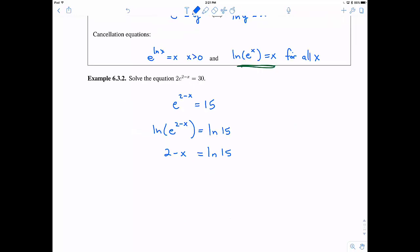So this is equal to the natural log of 15, and then now I can solve this for x. Add x on both sides, subtract the natural log of 15 from both sides, and boom, we have x equals. We have solved this equation.